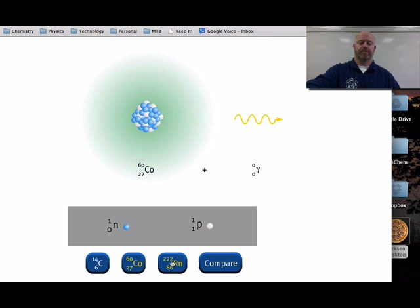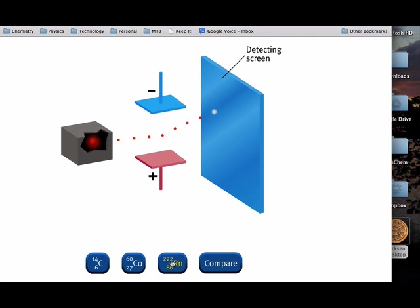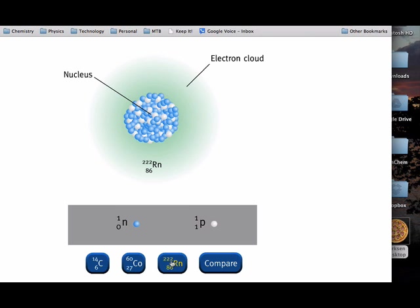Radon-222 is being formed continuously in our environment by decay of uranium-238. Radon, being a noble gas, is chemically unreactive. Therefore, it is not trapped by chemical processes in the soil or water and is free to seep up from the ground and into homes. Radon spontaneously emits alpha particles from its nuclei. Since alpha particles are attracted to the negative plate of an applied electrical field, they must be positively charged.